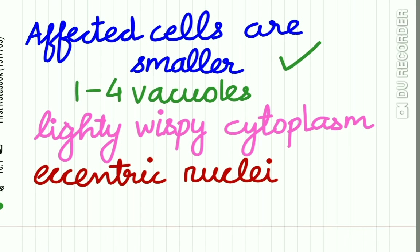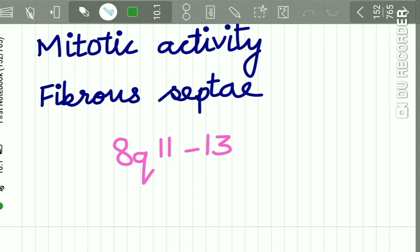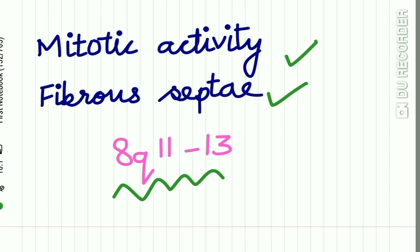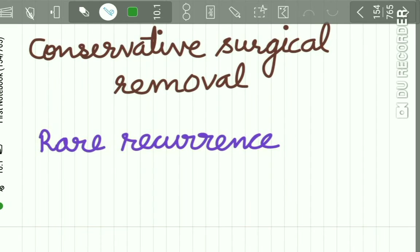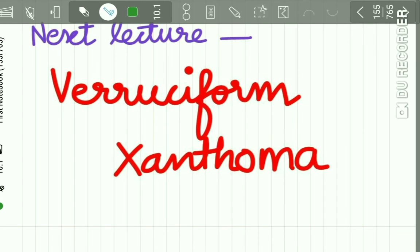Histologically, lipoblastoma has a central core of mature adipocytes with variable-sized fat vacuoles. Affected cells are smaller and show multiple vacuoles, light wispy cytoplasm, and eccentric nuclei. Mitotic activity may be seen. There is a fibrous septum and a defect in chromosome 8q11–13.